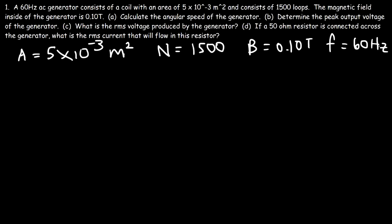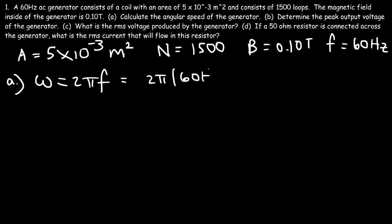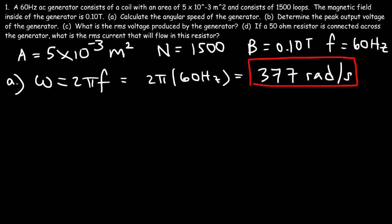For part a, the angular speed is simply 2π times the frequency. So it's 2π times 60 Hz, which gives us approximately 377 radians per second. That's all you need for the first part of the problem.